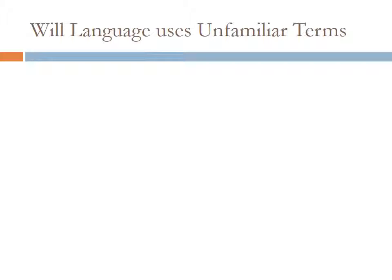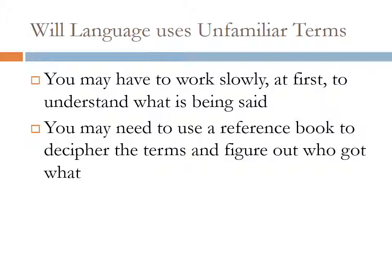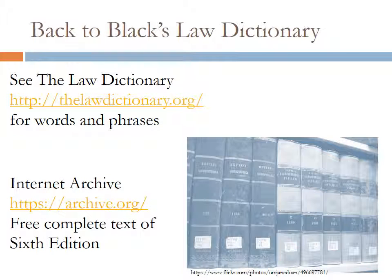Wills use language that may be unfamiliar — not the words you'd find on a grade school spelling test. You may have to work slowly at first to understand what's being said. It's very important to focus on each word; if you don't know the meaning, look it up using a reference book or online source. One of the basic books is Black's Law Dictionary, which you can search online. There are many websites that use Black's Law Dictionary to define legal terms. Another good source is the Internet Archive at archive.org, which has a complete text of the sixth edition available for searching.